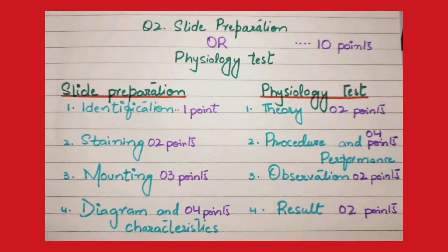Going towards question number two — slide preparation or physiology test. The teacher will tell you whether your group is A or B. You will perform only one of these. If you get slide preparation, which is temporary mounting, you have to do four distinct parts: first is identification, second is staining, third is mounting, and fourth is drawing the diagram and writing characteristics or reason of identification. Slide preparation is of one mark, that is 10 points. Identification is 1 point, staining is 2 points, mounting is 3 points.